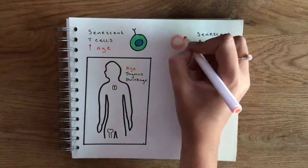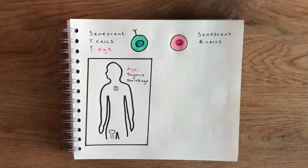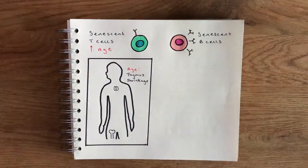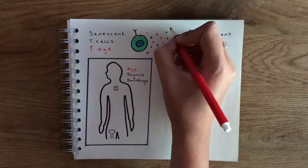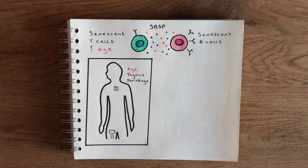Both B and T cells have also been shown to have a senescence-associated secretory phenotype, or SASP, which I talked about in the previous tutorial with regards to fibroblasts — although the kinds of things that they're secreting are slightly different.